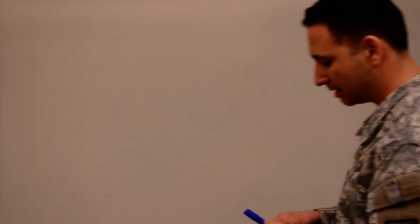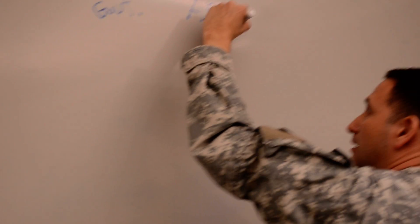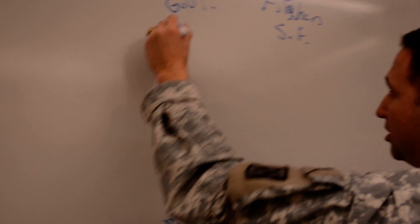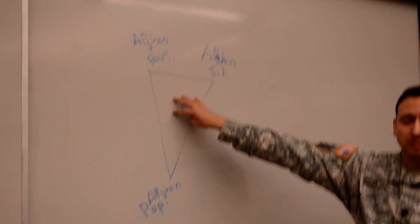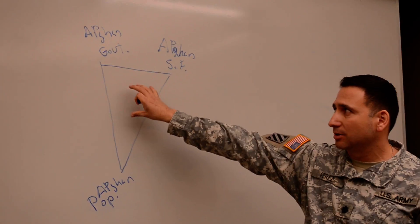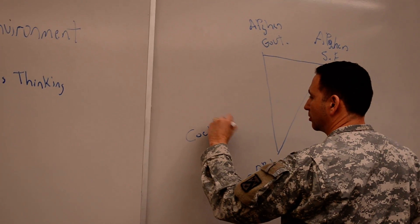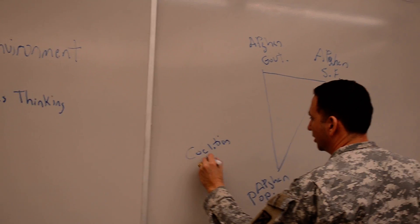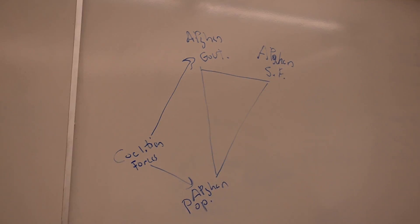When General Rodriguez talked about the operational environment, he talked about it in Clausewitzian terms, where he talked about the population - the Afghan population - the Afghan government, and the Afghan security forces - the army and the police. What he was trying to achieve was a tight relationship between the Afghan government, security forces, and the population. This, to him conceptually, is what General Rodriguez was trying to effect in Afghanistan and help along. The coalition forces were there to support the Afghan government and the Afghan population, and through the Afghan government, support the security forces to build this trinity.